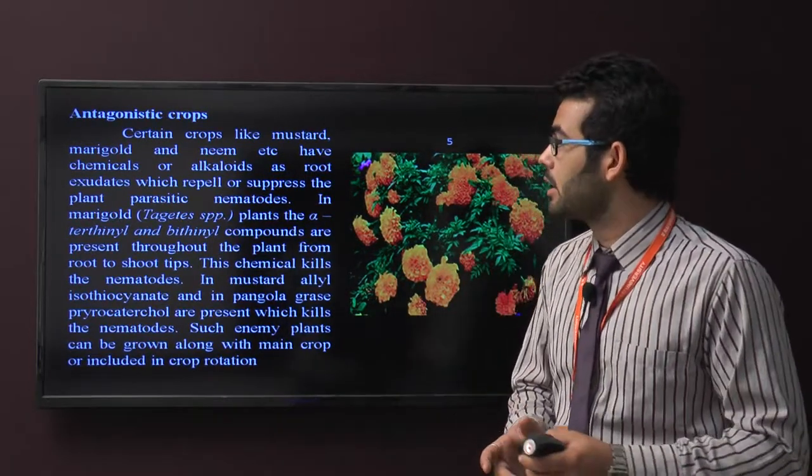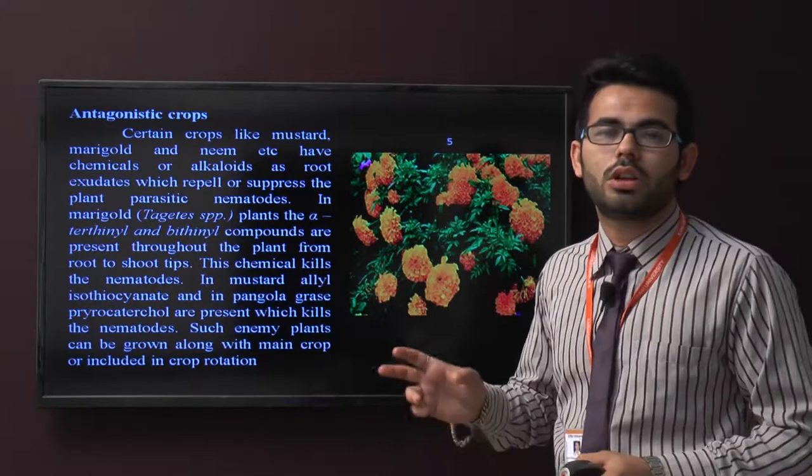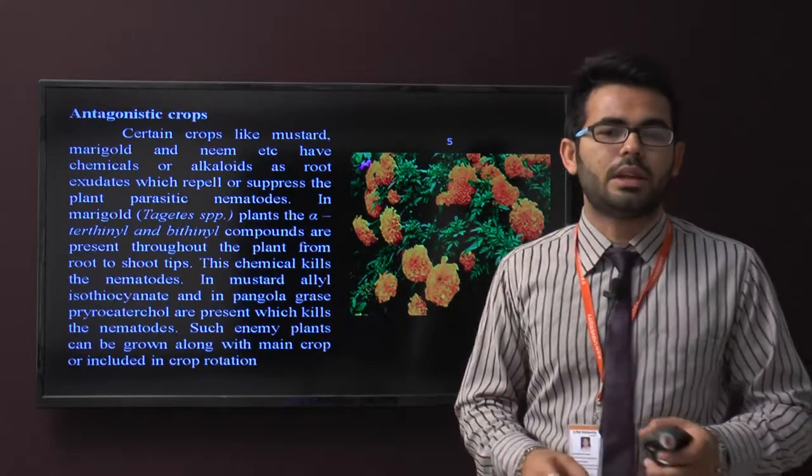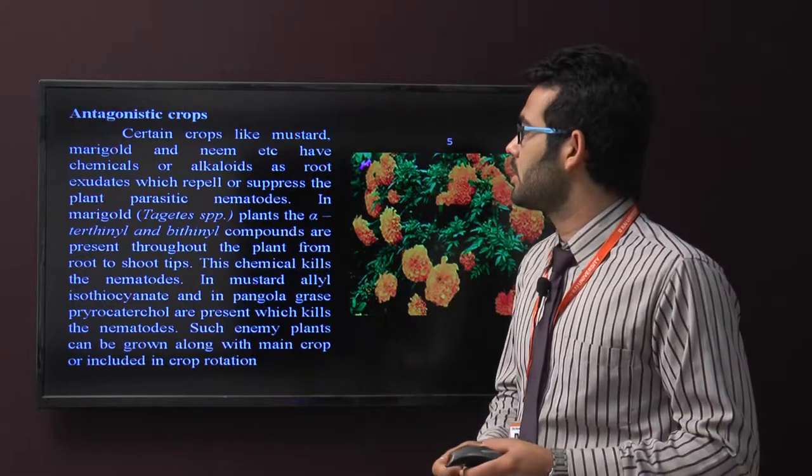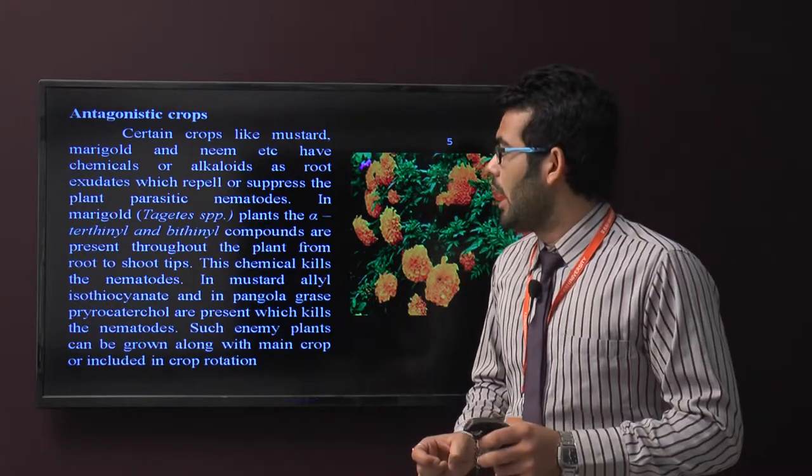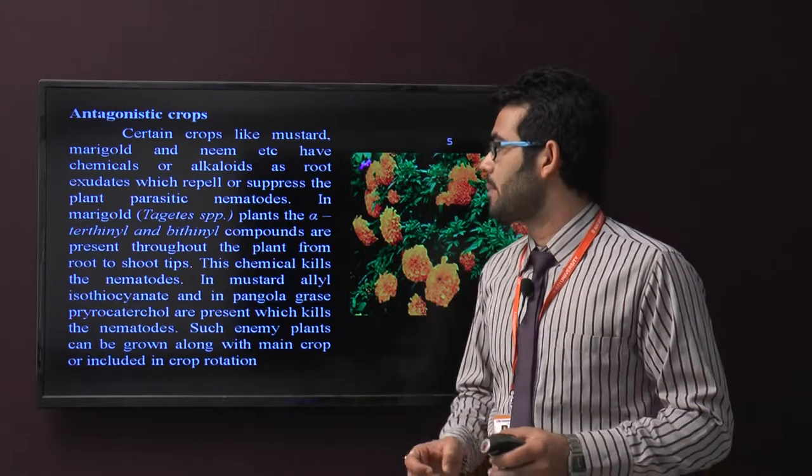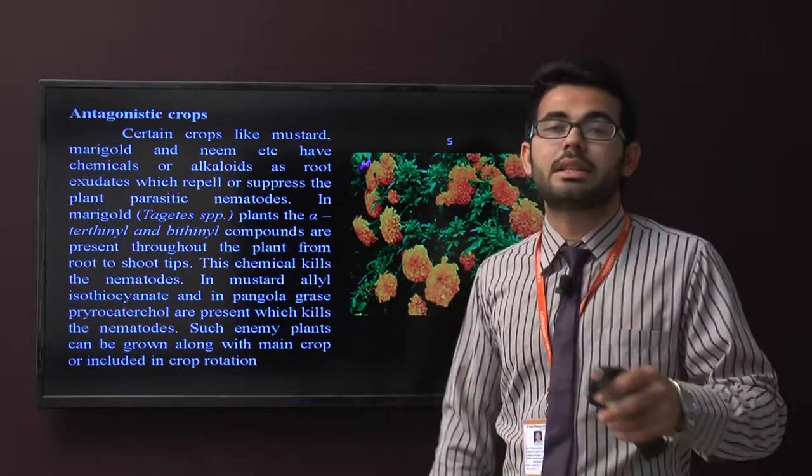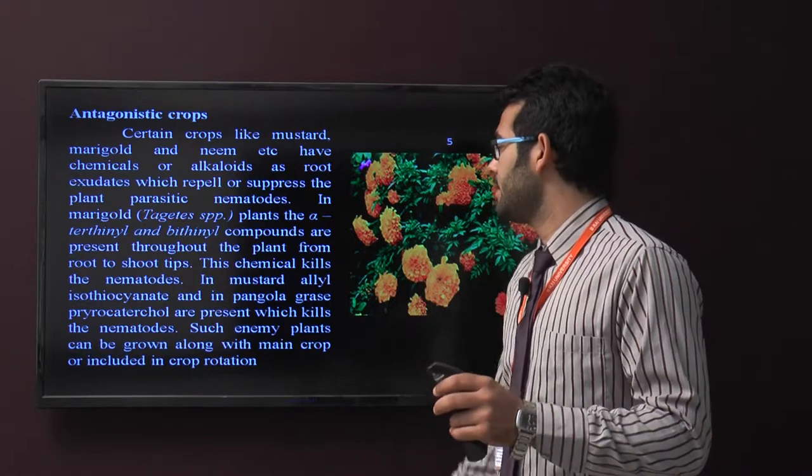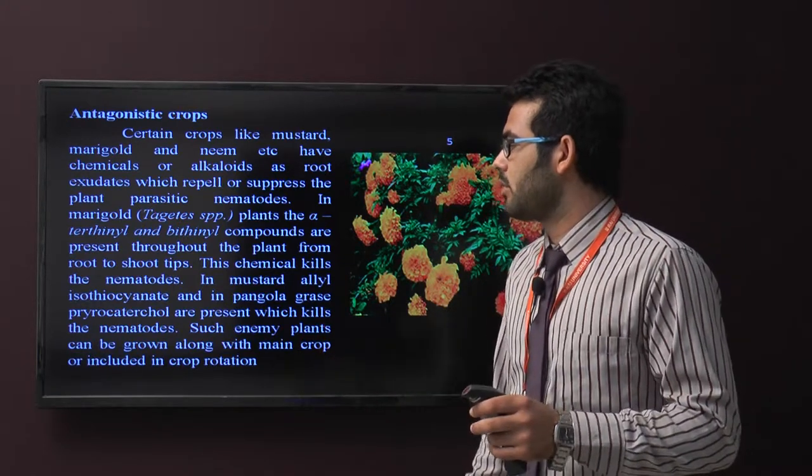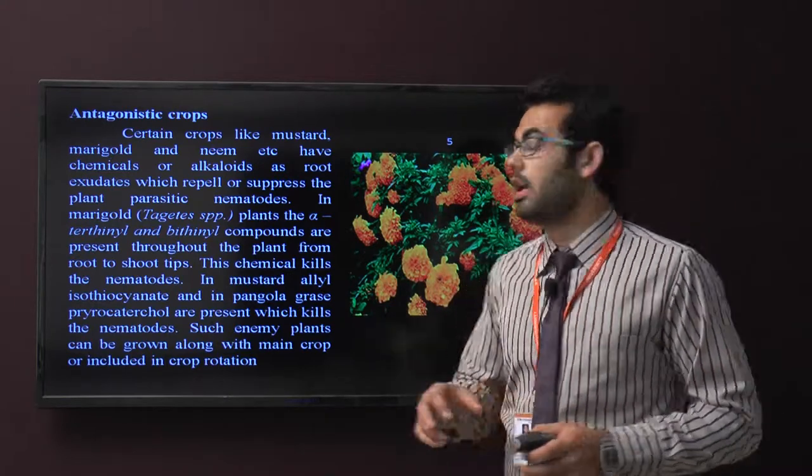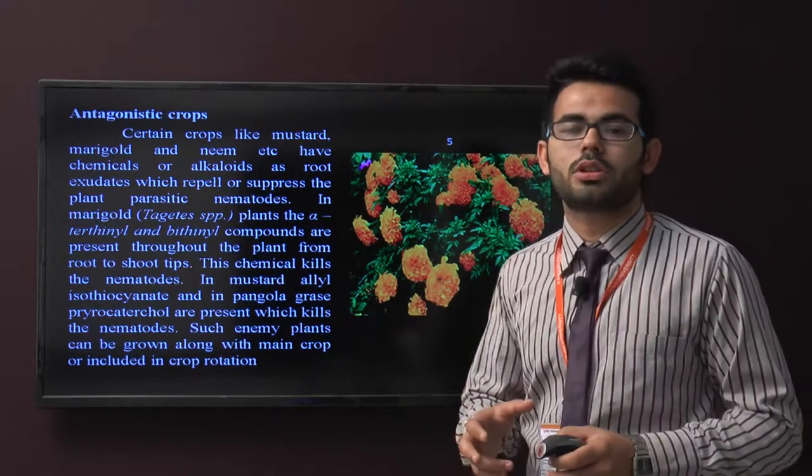Antagonistic crops have some chemical compounds from all parts of the plant like marigold. Certain crops like mustard, marigold, and neem have chemicals or alkaloids as root exudates which repel or suppress the plant parasitic nematodes. In marigold, the plant has alpha-terthienyl and beta-terthienyl compounds present throughout the plant from root to shoot tip and these chemicals kill the nematodes. In mustard, allyl isothiocyanide and in pangola grass, phytotoxicol are present which kill the nematodes. Such enemy plants can be grown along with the main crops or included in crop rotation for the control of nematodes.